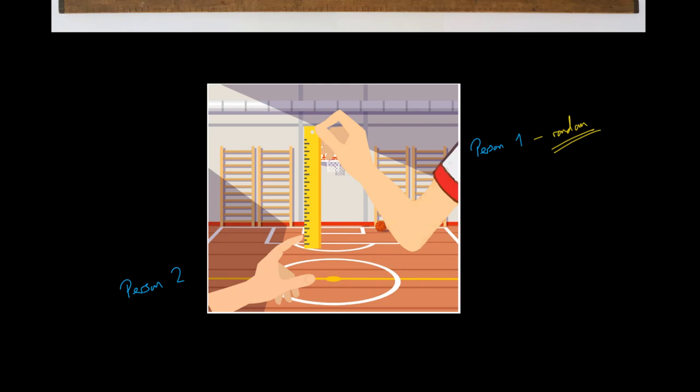Person two responds to this stimulus, moves their fingers in, and tries to catch the ruler. Basically, this is all to do with how far does the ruler fall before it is caught.